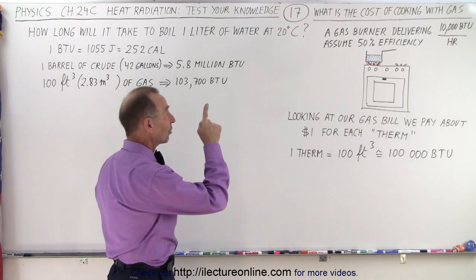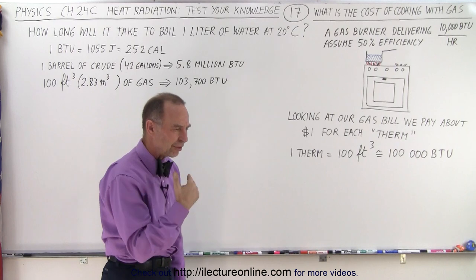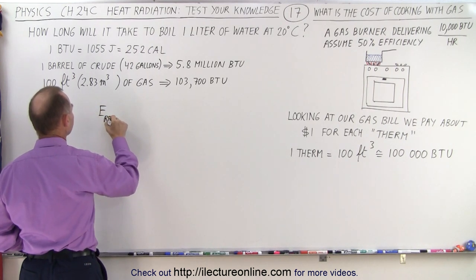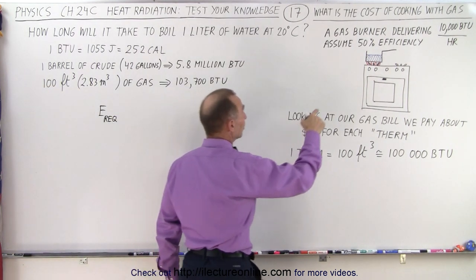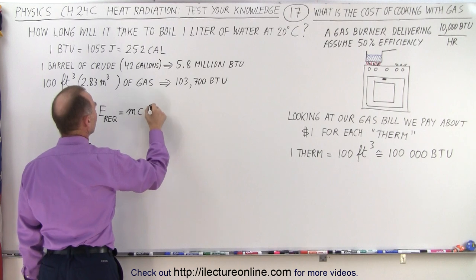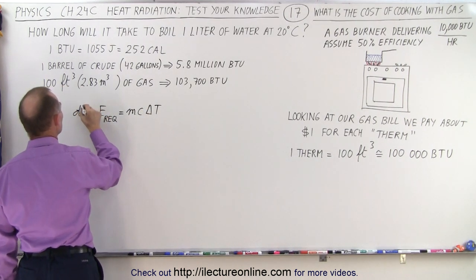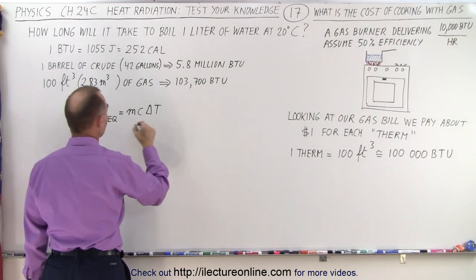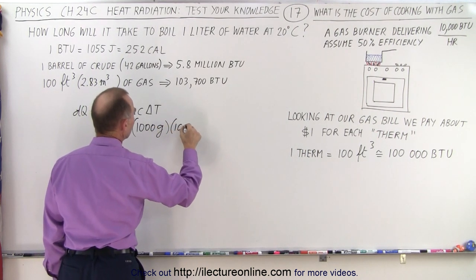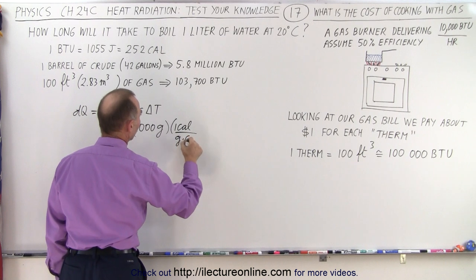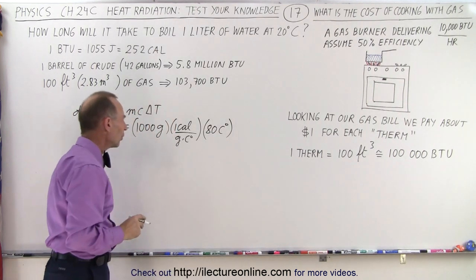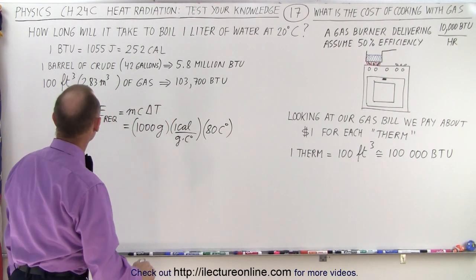Now let's figure out how much it costs to boil that pot. So first, what we need to do is figure out how many BTUs we need to boil that water. So the energy required, and of course we have to keep in mind the efficiency, we'll take care of that in just a moment. The energy required is equal to mcΔT. Of course, that is equal to dQ, and we can call that the energy required. And in this case, that is equal to 1,000 grams for a liter of water. That will give us one calorie per gram per Celsius degree, and then the difference in temperature is 80 Celsius degrees.